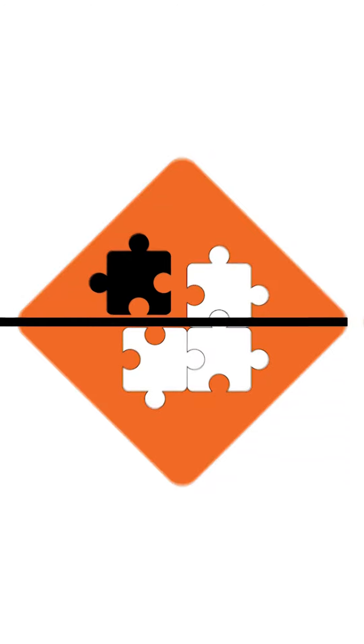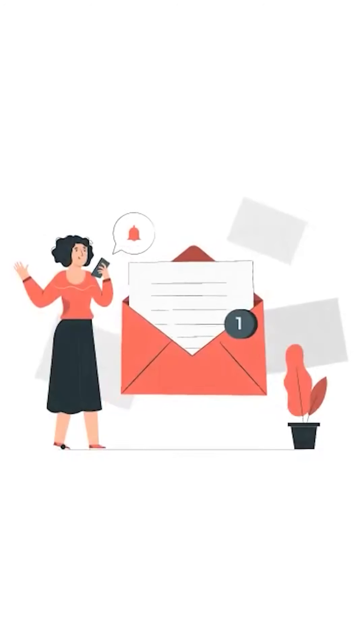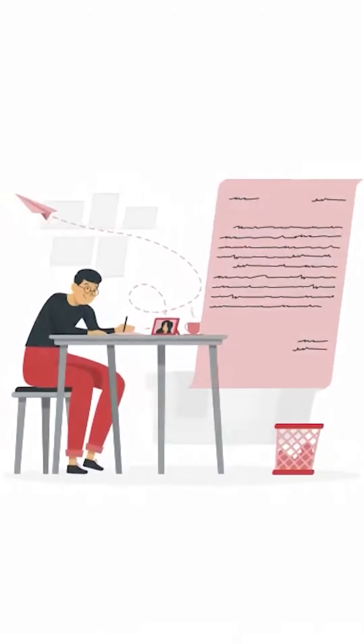First, identify the problem, then give a quick and straightforward greeting and introduction. The first sentence of your proposal should be the problem statement from the job description — the problem you have identified. You can write it in your own words.